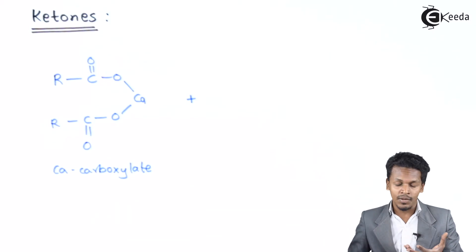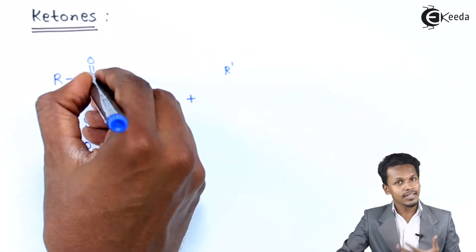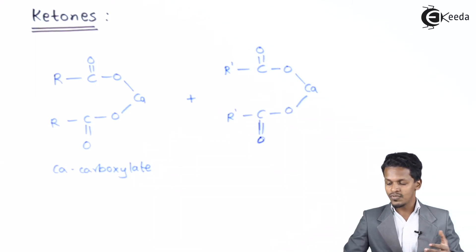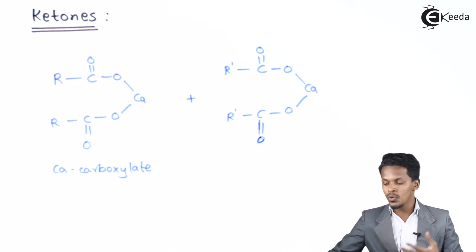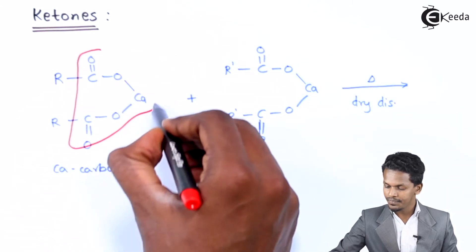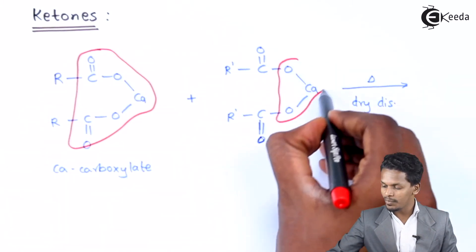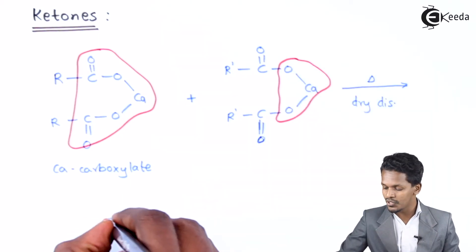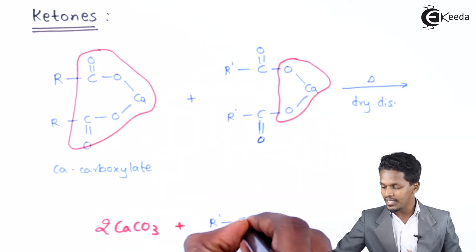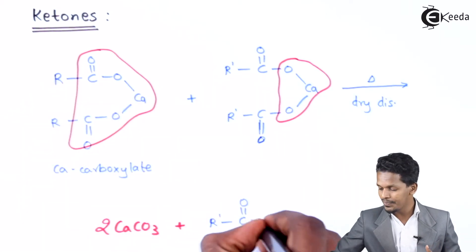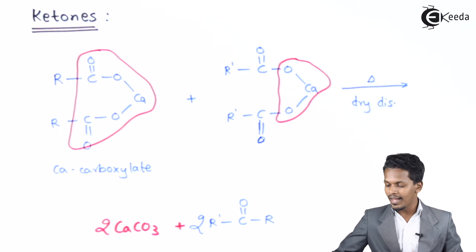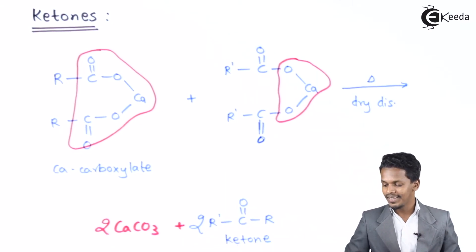Suppose it has been reacted with another calcium carboxylate having a different alkyl group attached to the carbonyl carbon. If this reaction undergoes dry distillation, the COO part would be removed from each calcium carboxylate, giving two moles of CaCO₃ as byproduct. The main product is R–C(=O)–R′, and we get two moles of R–C(=O)–R′, which is nothing but a ketone.